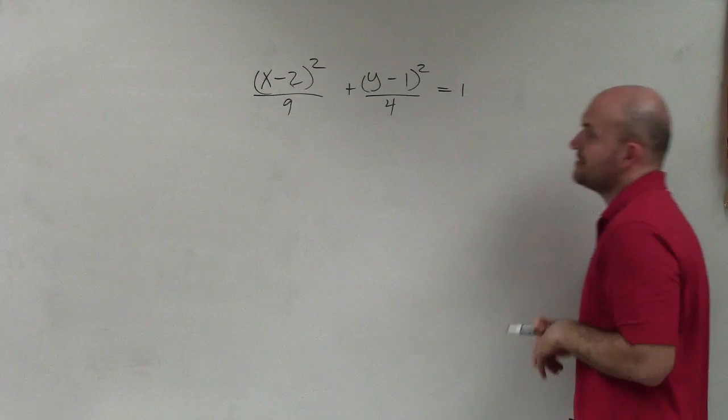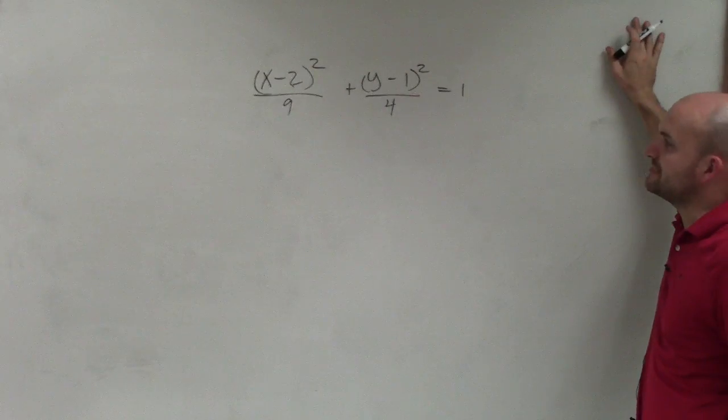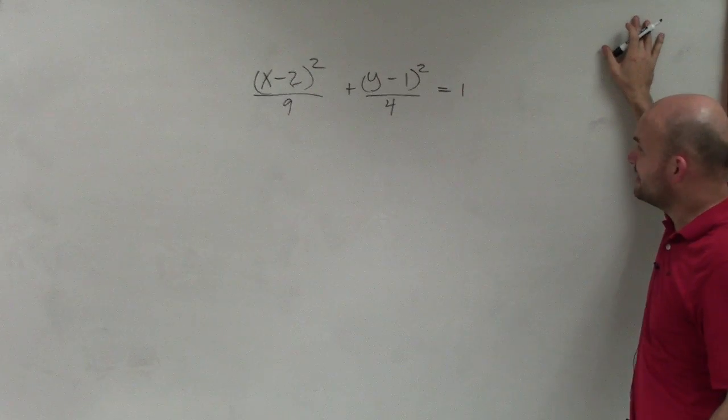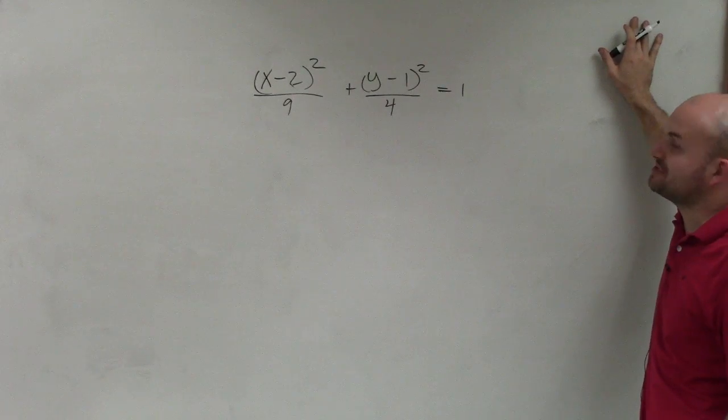Welcome. What I have here is (x-2)²/9 + (y-1)²/4 = 1. What we want to do is be able to graph this ellipse as well as identify the center, the vertices, co-vertices, and foci.